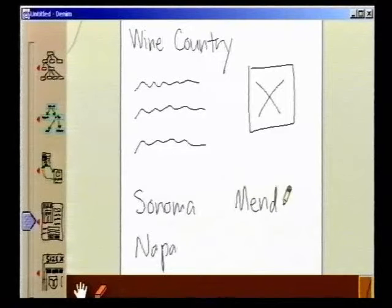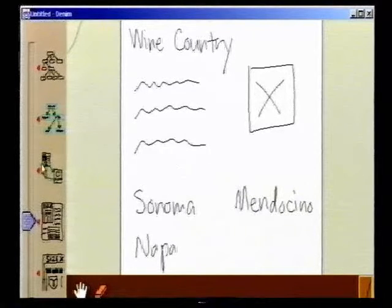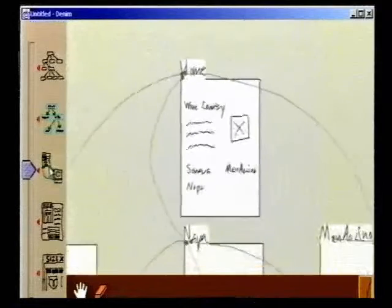Now Bob wants to create links from one webpage to another. One of those pages is not visible, so first, he zooms out to the storyboard view so he can see several pages.